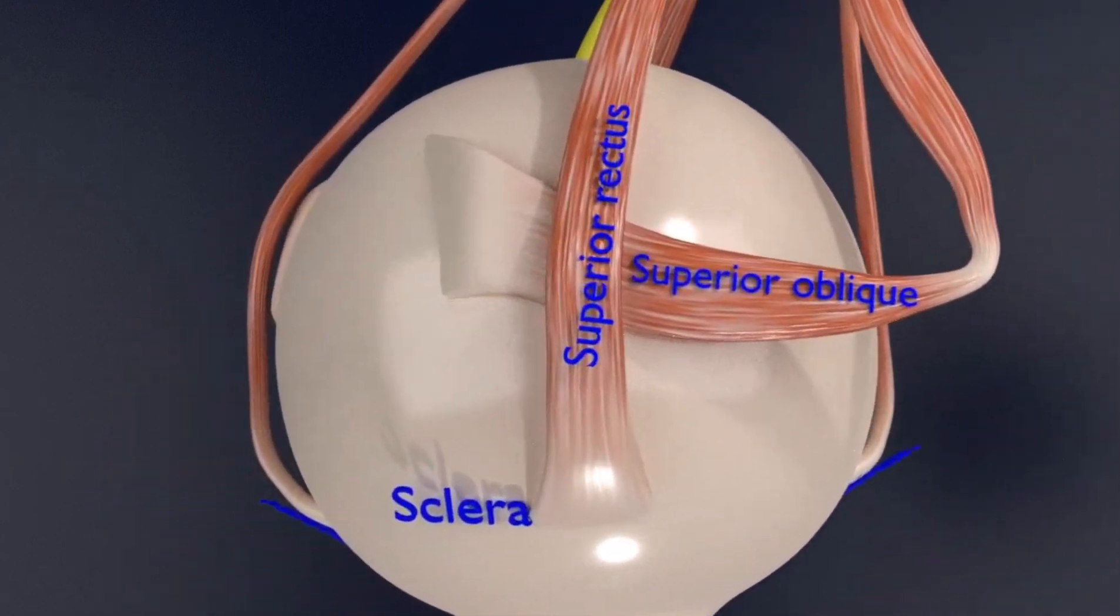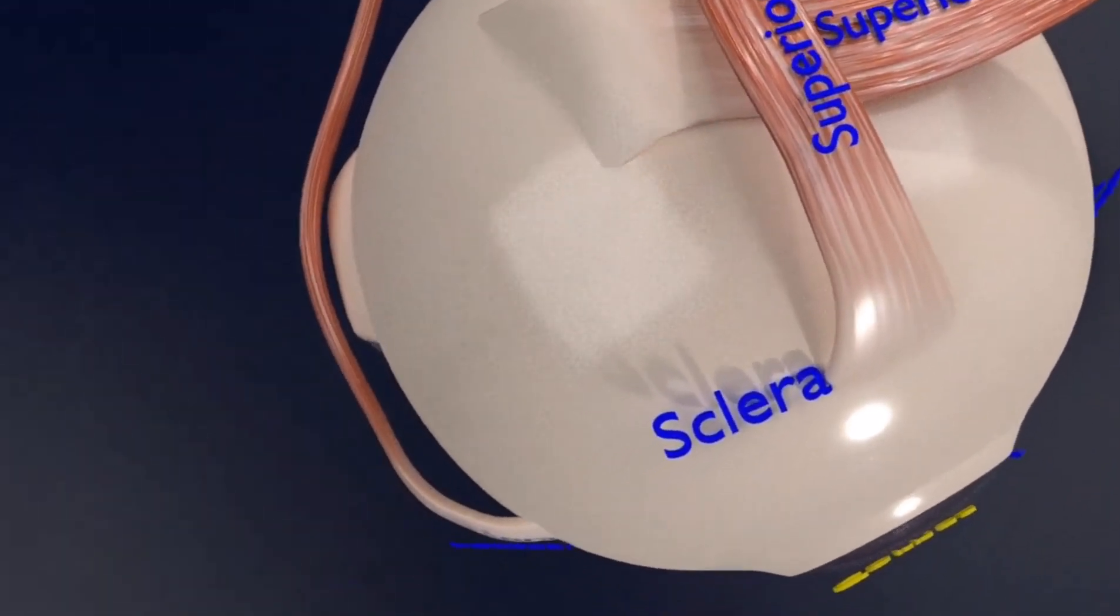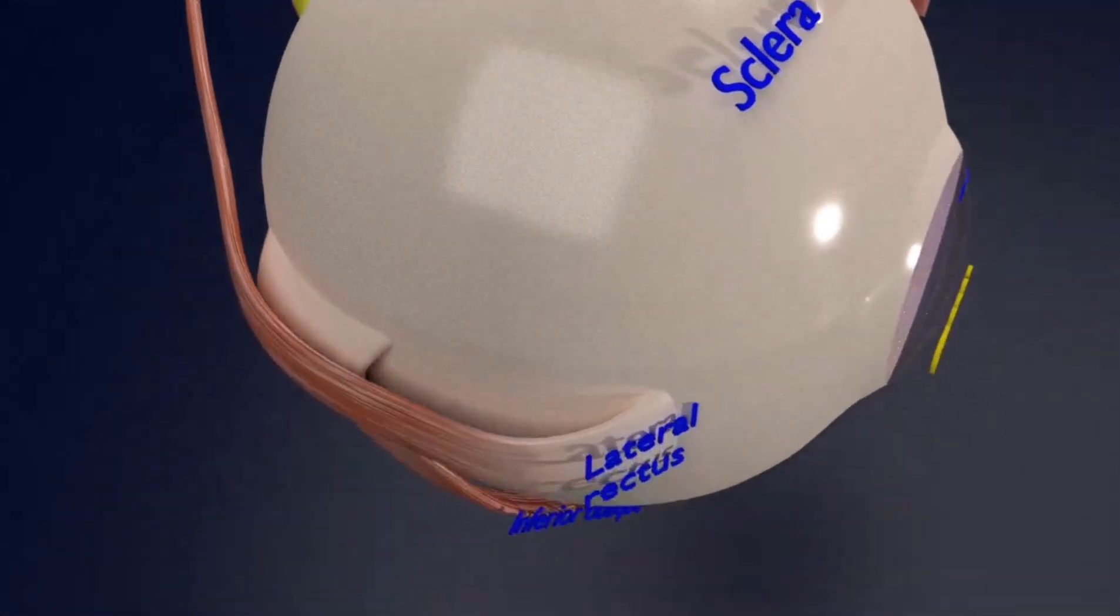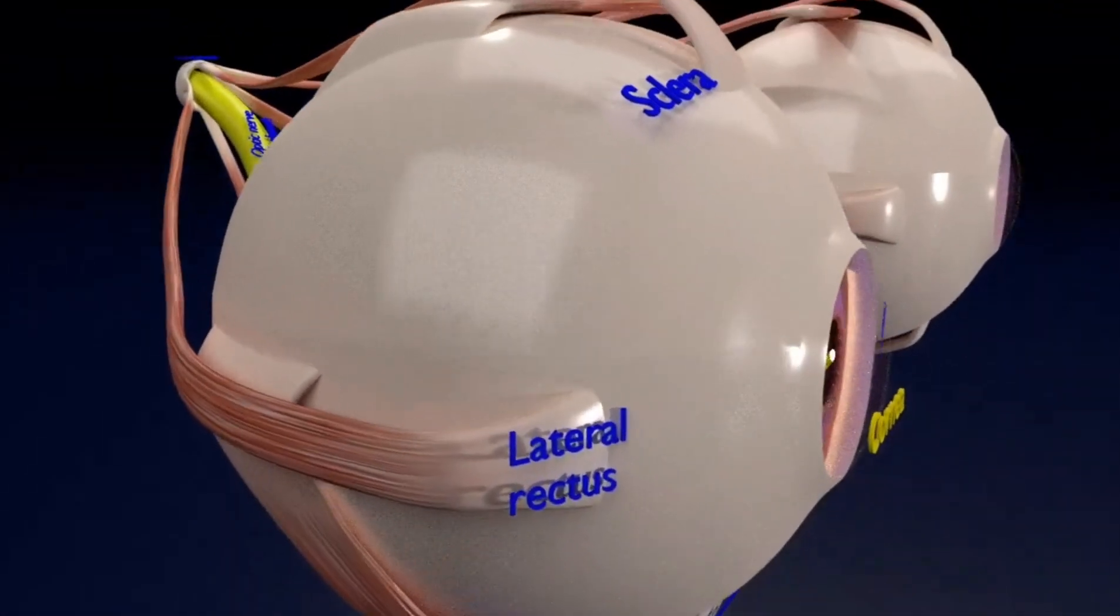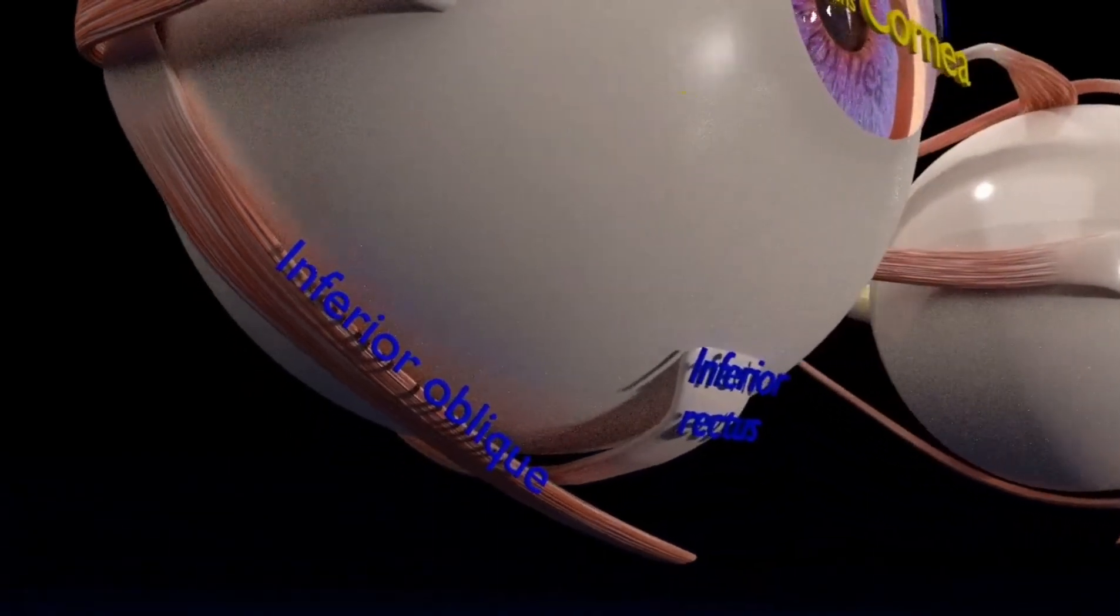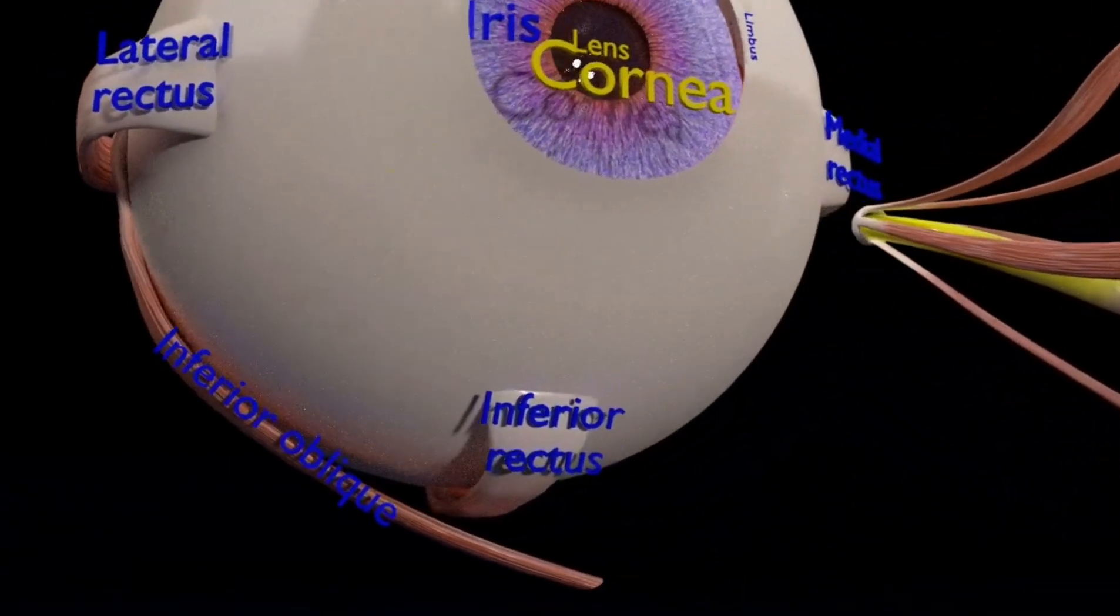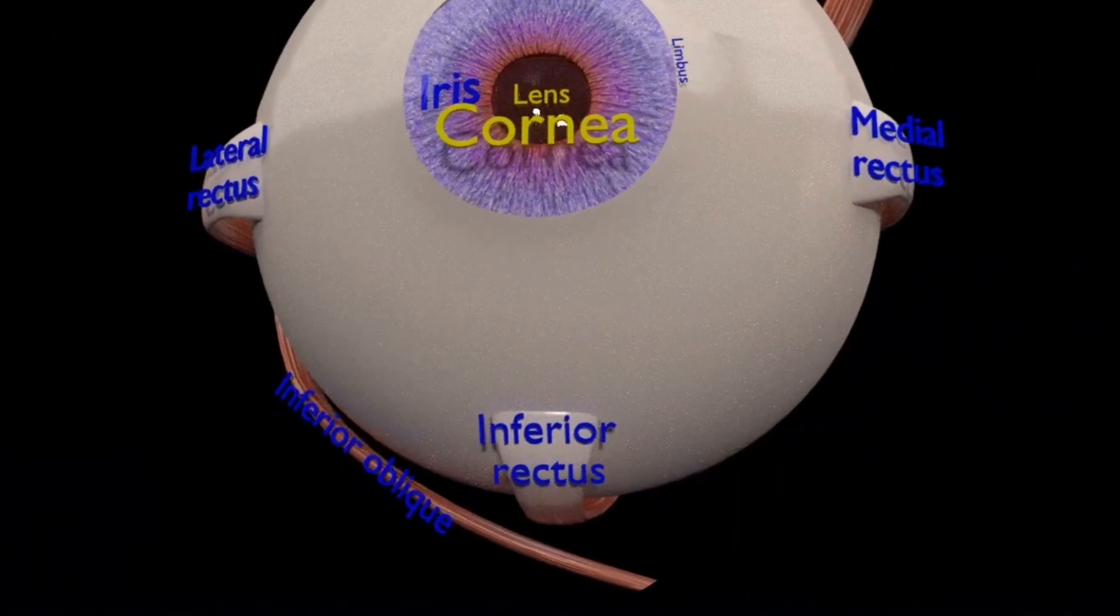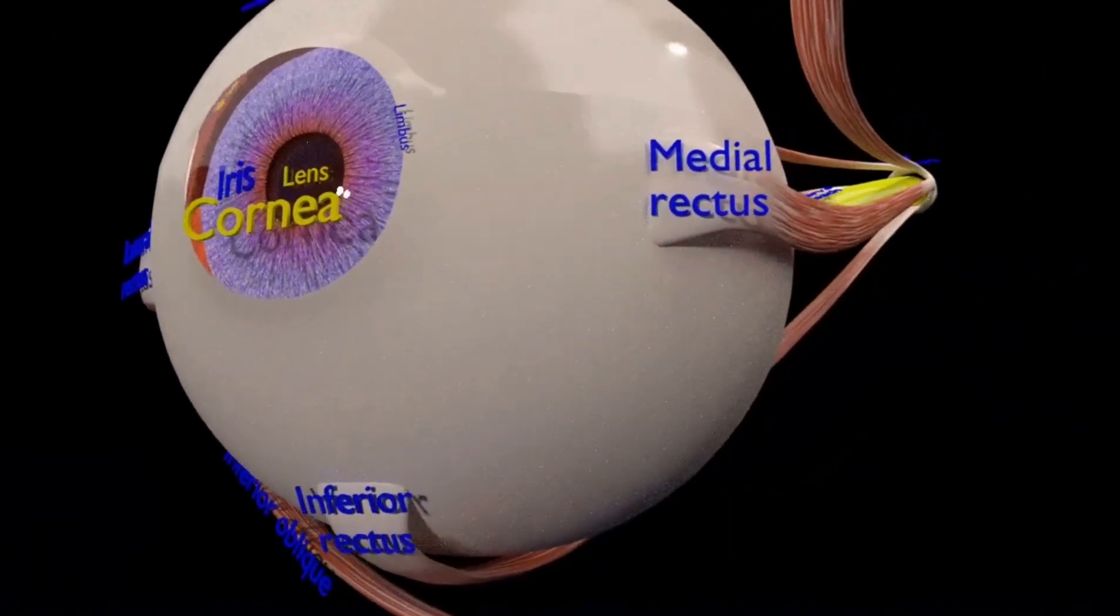Moving laterally, you can see the lateral rectus and inferiorly, and now moving inferiorly, you can see the inferior oblique and the inferior rectus. And going medially, you can see the medial rectus.